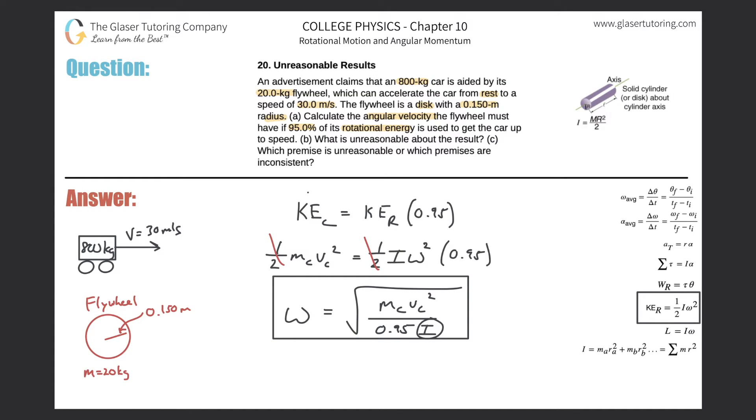This is the formula, so I can expand on the I - the moment of inertia. They told us the flywheel is like a disc, so here's the formula for the moment of inertia: mr squared over two. I'll start plugging in values. The mass of the car was 800 kilograms, the velocity was 30 once it reaches speed, squared, divided by 0.95 multiplied by the moment of inertia. That moment of inertia is the mass of the flywheel - 20 - multiplied by the radius 0.15 squared, and that whole thing divided by 2.